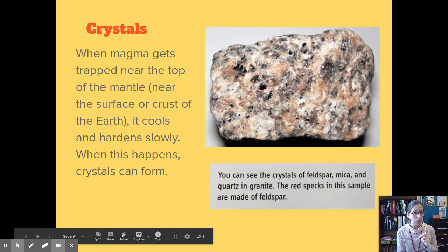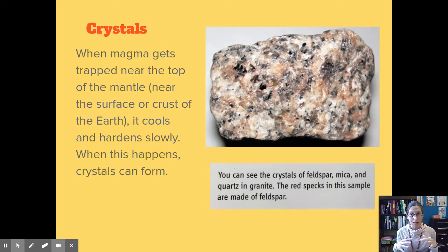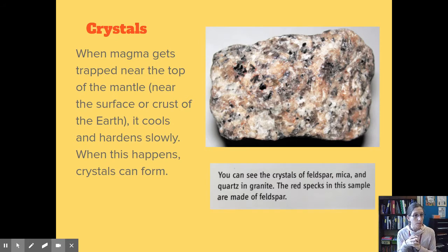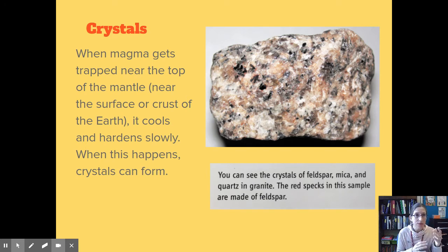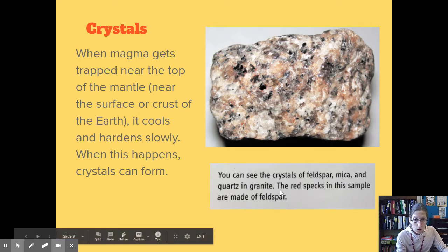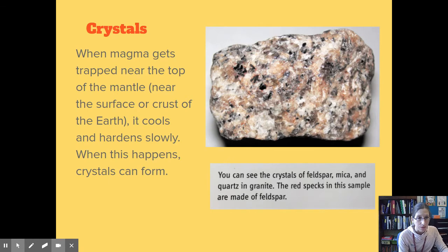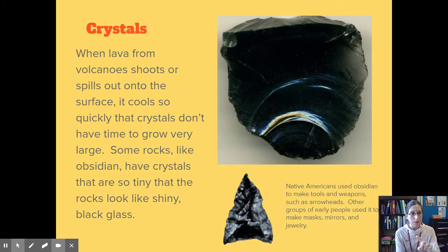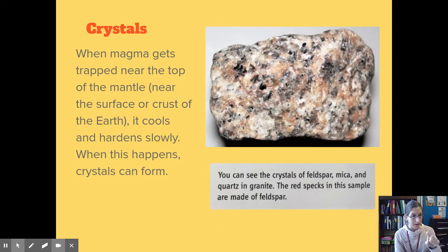Sometimes lava can cool slowly. When magma gets trapped near the top of the mantle and cools slowly after coming through the surface, crystals have time to form. Here's an example — this is a piece of granite. You can see the crystals of feldspar, mica, and quartz. The red specks in this sample are made of feldspar. Granite looks very different from obsidian: obsidian cooled so quickly you can't see any crystals, but granite cooled slowly so we can see the crystals clearly.